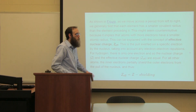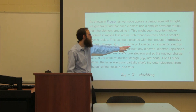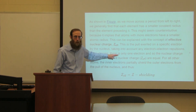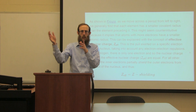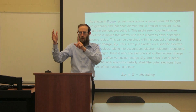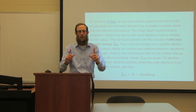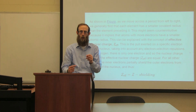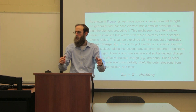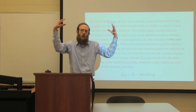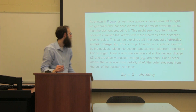Why does size decrease going across a period? This can be explained with the concept of the effective nuclear charge - the pull exerted on a specific electron by the nucleus. All of the electrons we're adding are being added to the valence shell. The principal quantum number is the same, meaning the shell size from the nucleus is constant. As we're adding those electrons in, they're being added to that same shell. However, the nucleus is increasing in positive charge.